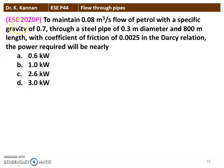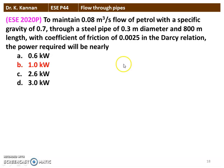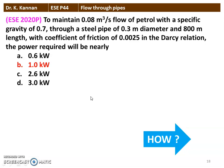The next question from the 2020 question paper: to maintain 0.08 m³/s flow of petrol with specific gravity 0.7 through a steel pipe of 0.3 m diameter and 800 m length, with coefficient of friction 0.0025 in the Darcy relation, the power required will be nearly. The correct option is 1 kilowatt. We will see how in the next slide.